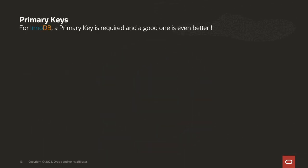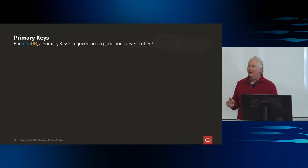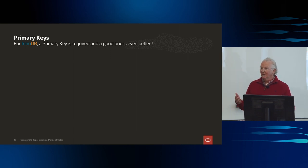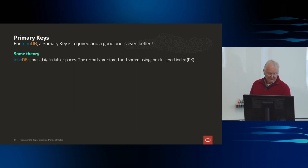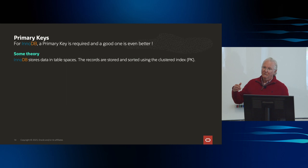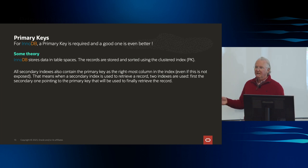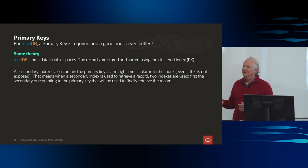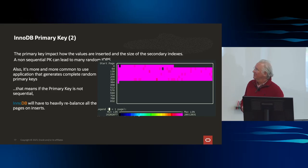Number three: the primary key. We want to have a good primary key, and there are such things as no primary keys and bad primary keys. We store data in a table space, and when we have a primary key, it's on a clustered index. We also have secondary keys, and those secondary keys have to refer to the primary key to find the row. So the primary key is always going to be used unless you're doing a full table scan.